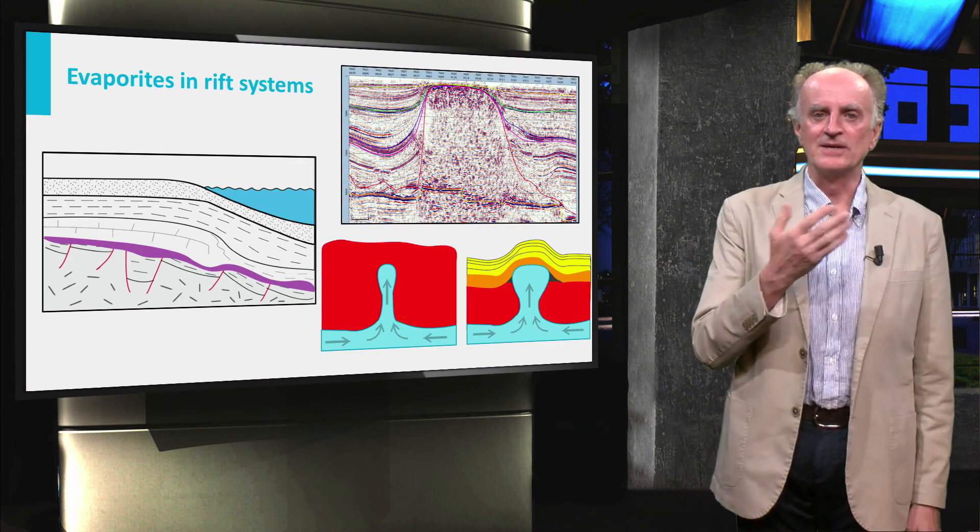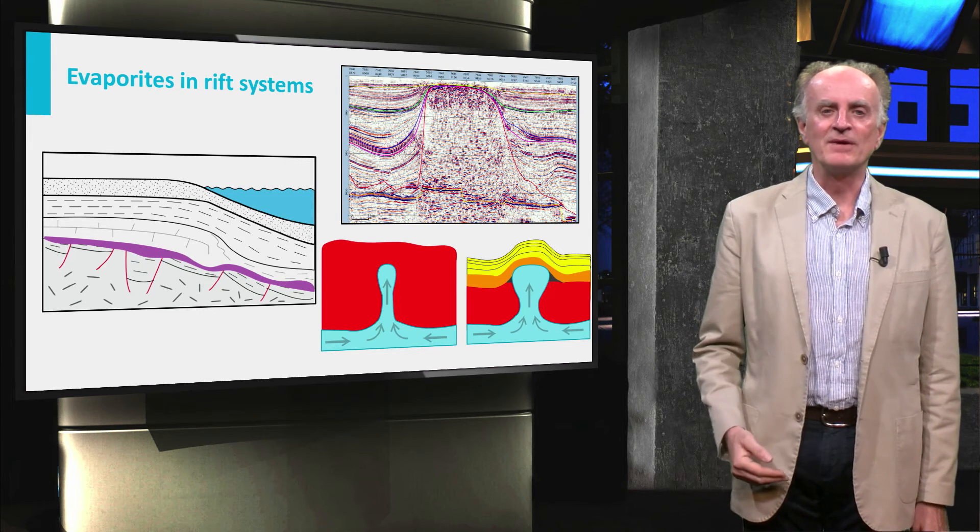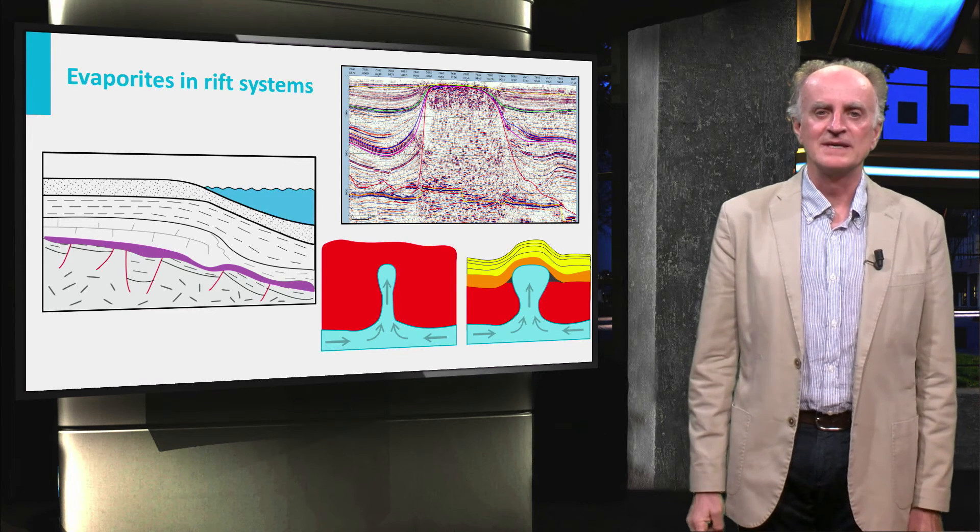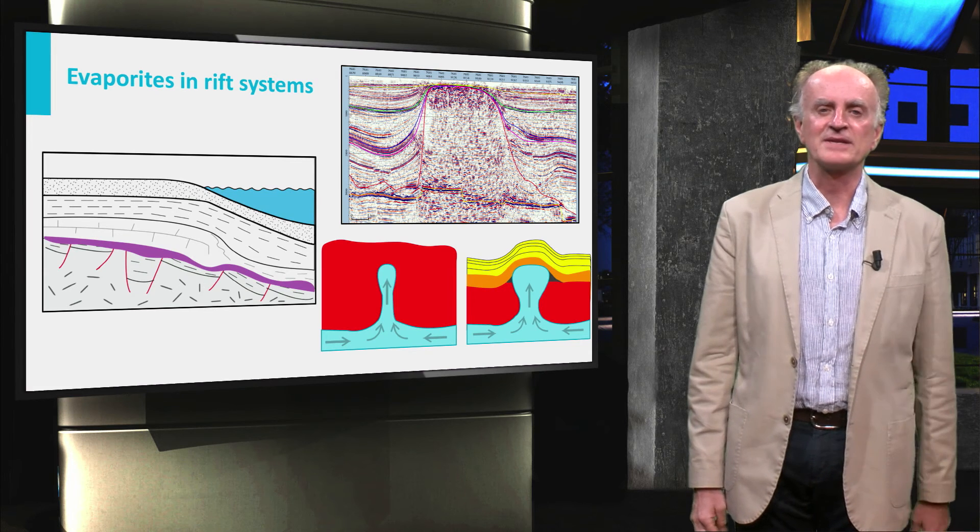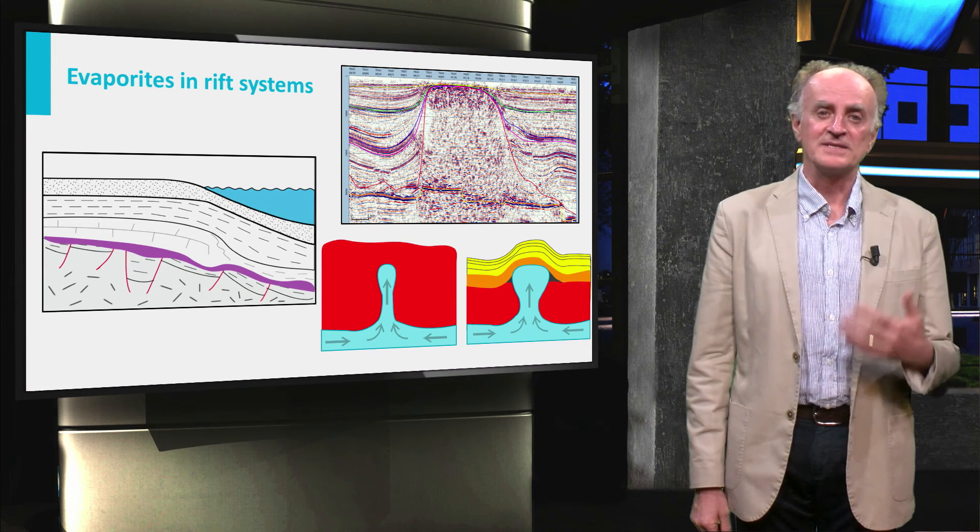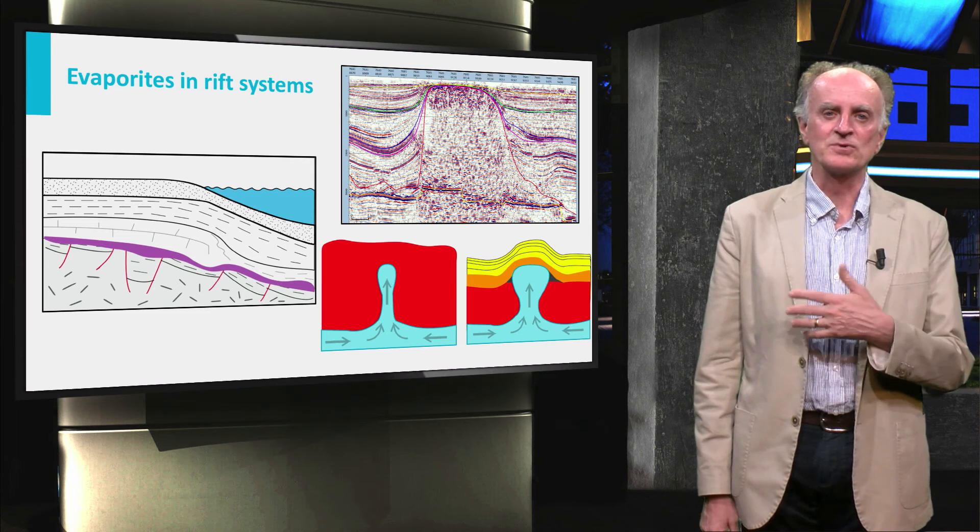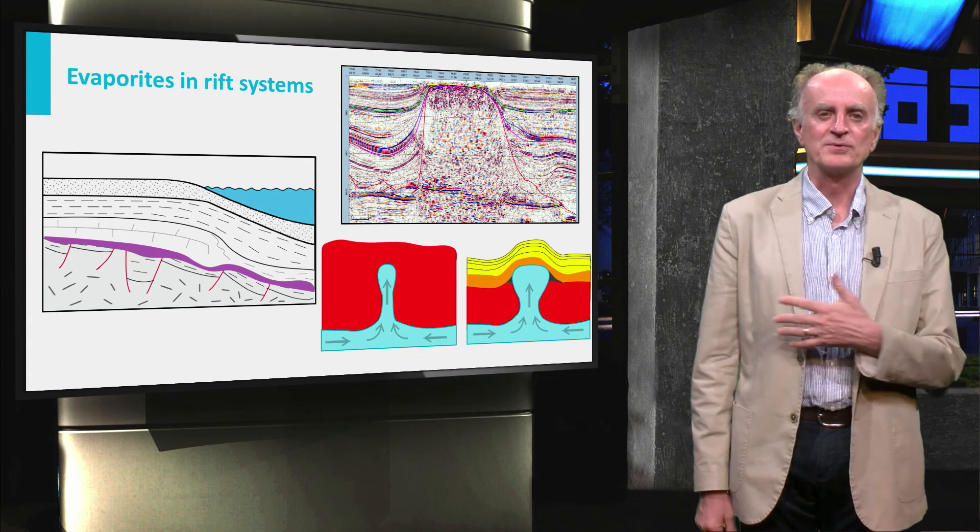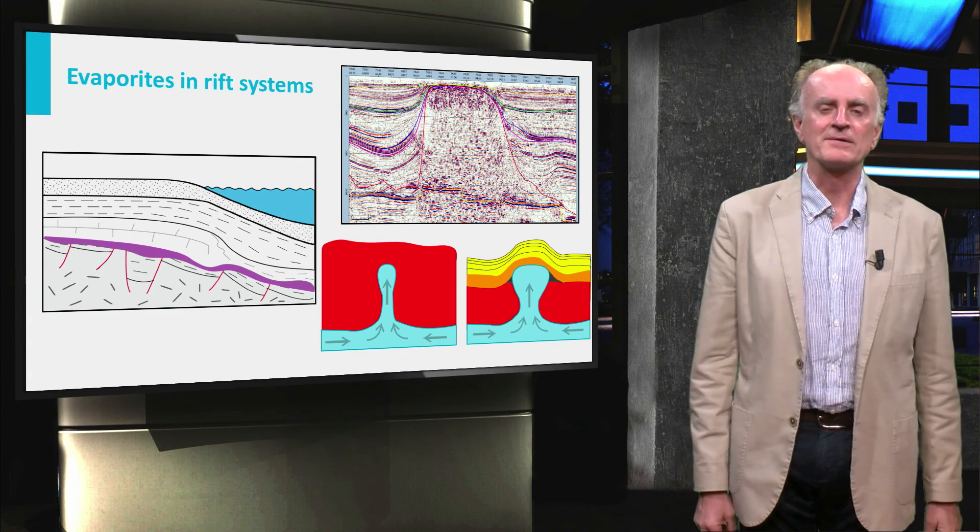Salt is a perfect seal and is a key component of some of the largest hydrocarbon fields, such as those recently discovered in the offshore of the Brazilian margin. These sub-salt fields are sourced by thin rift succession and produce more than one million barrels a day.